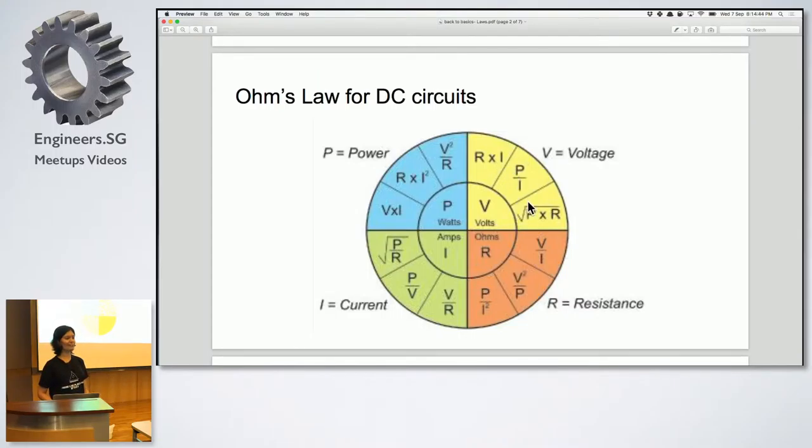So basically, you can say that power, voltage, current, and resistance are kind of interrelated, and if you want to find one, you can find the other. If you're looking for power rating in your sockets or something like that, these kind of equations will be useful. But once again, this is Ohm's law for DC circuits.